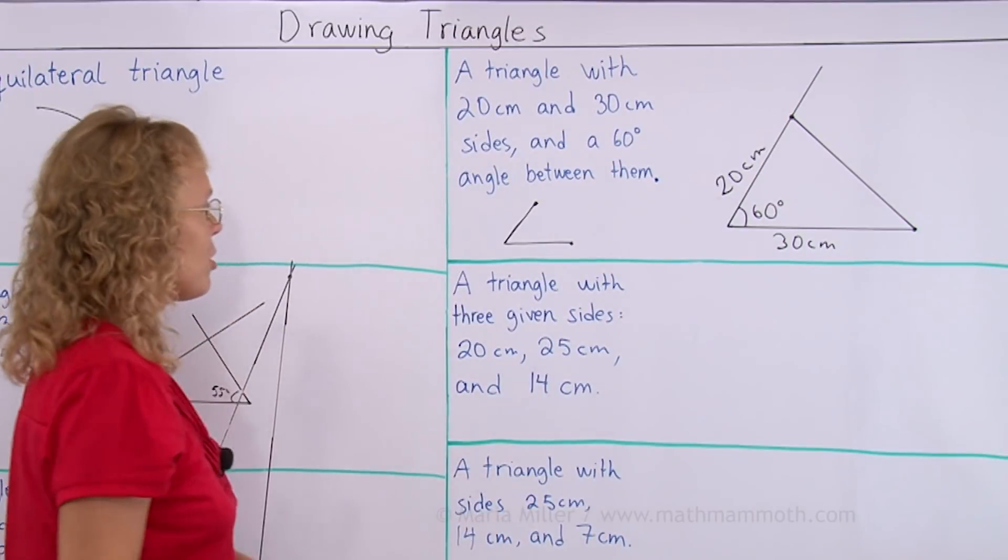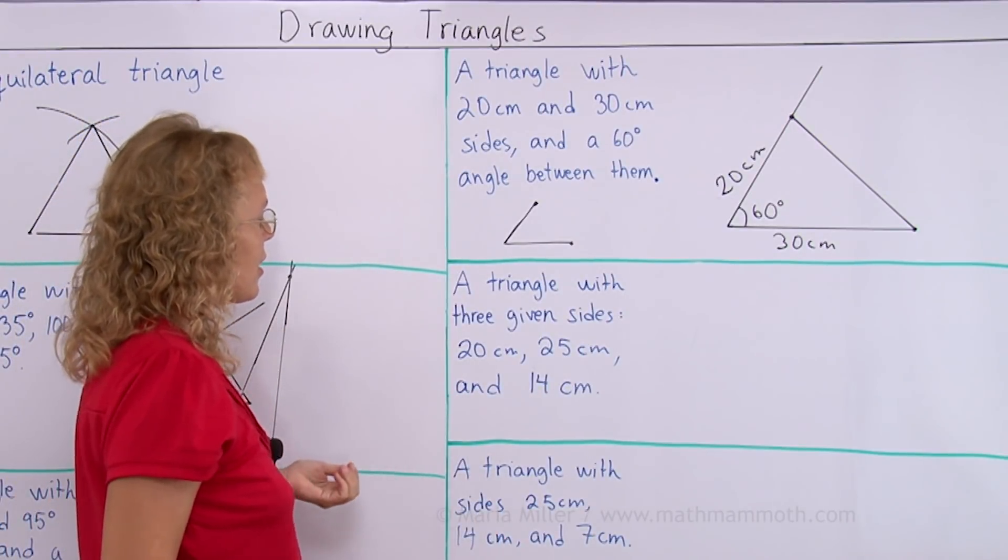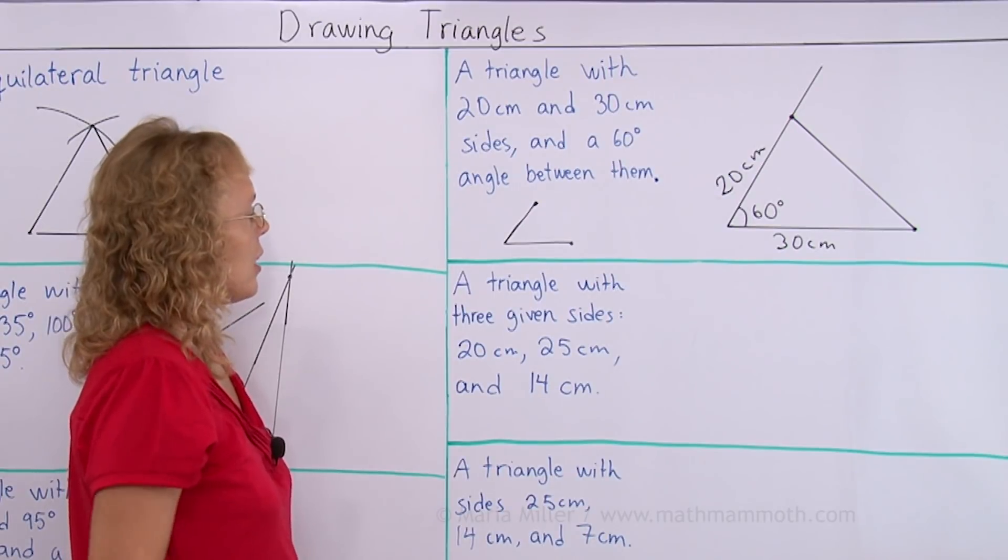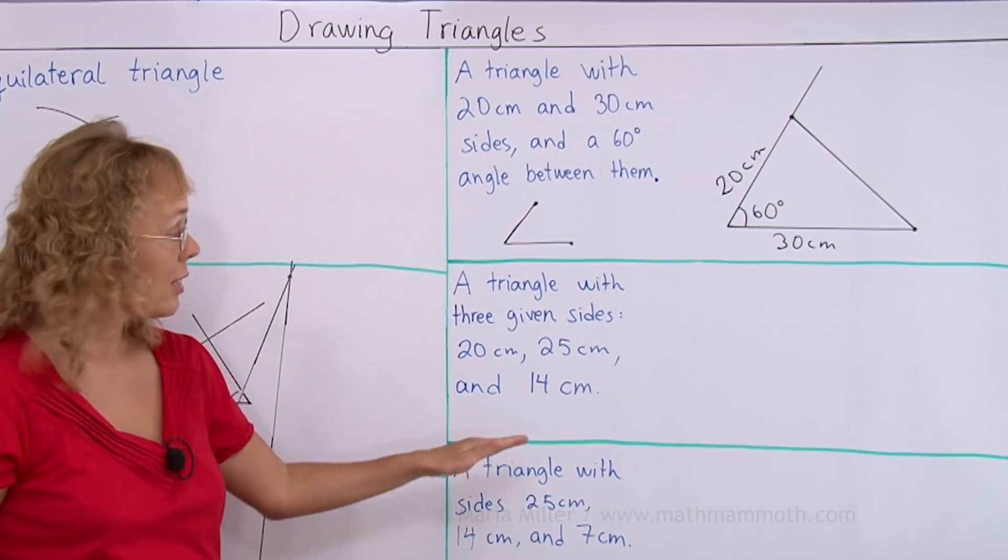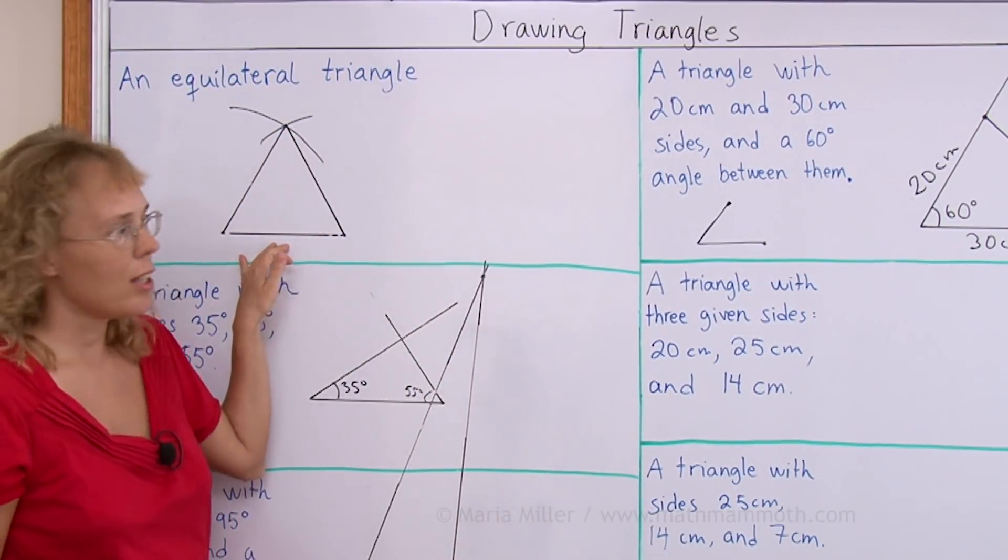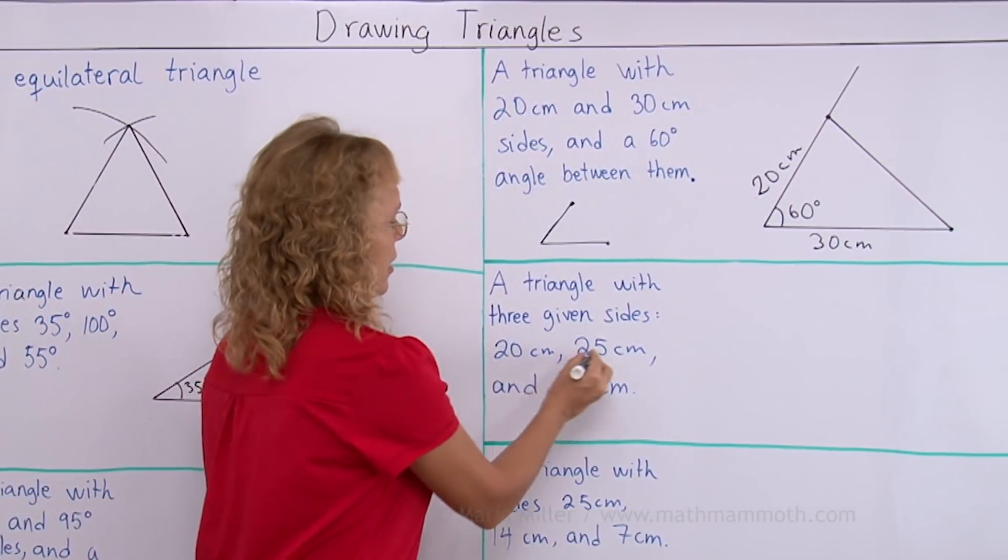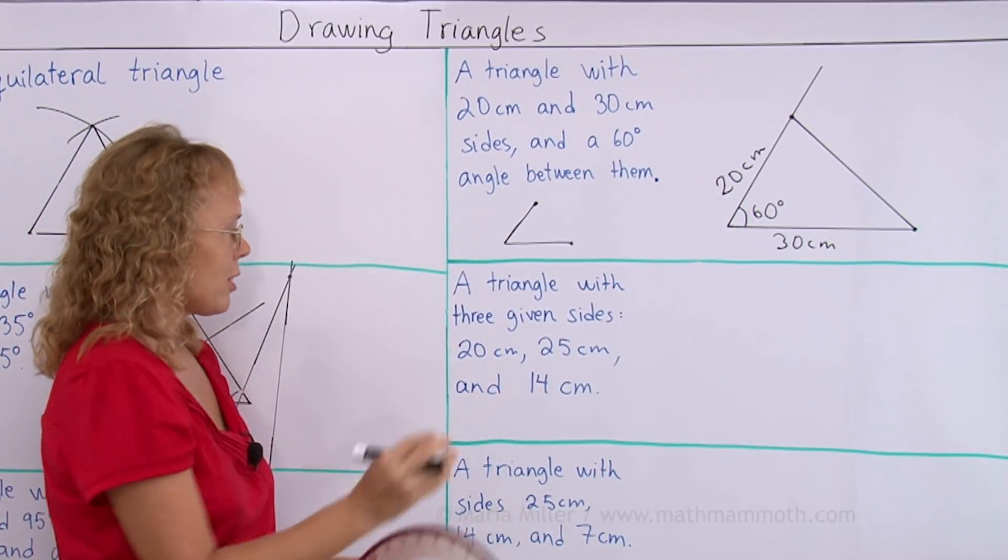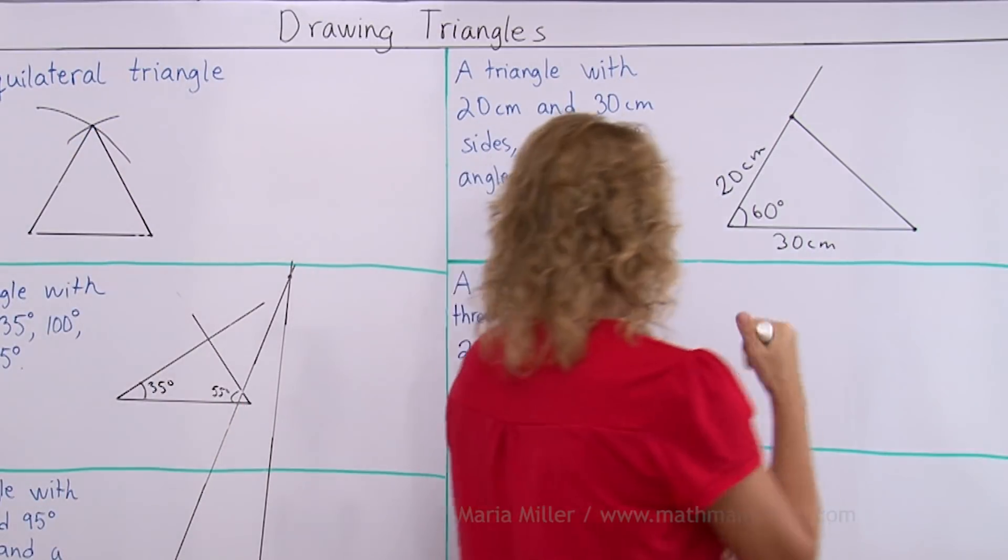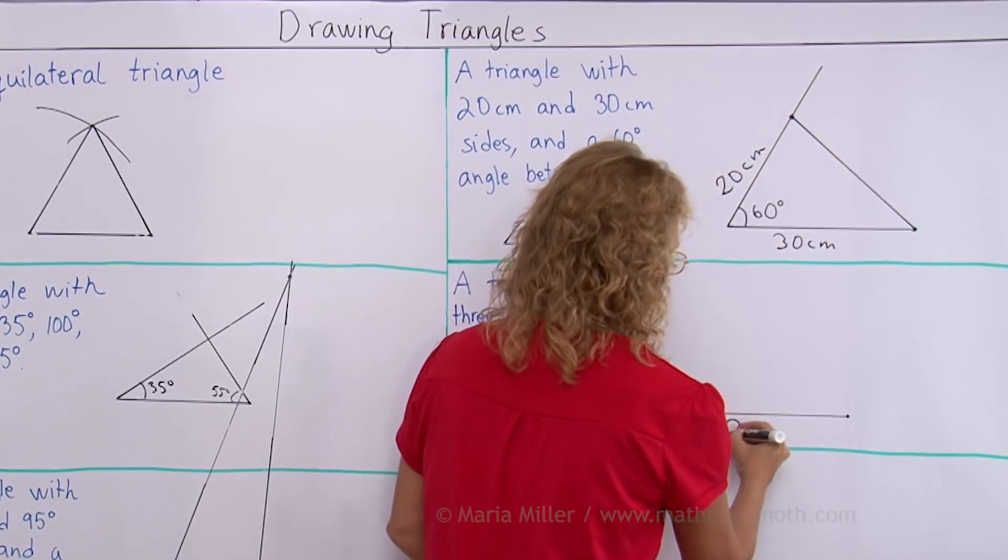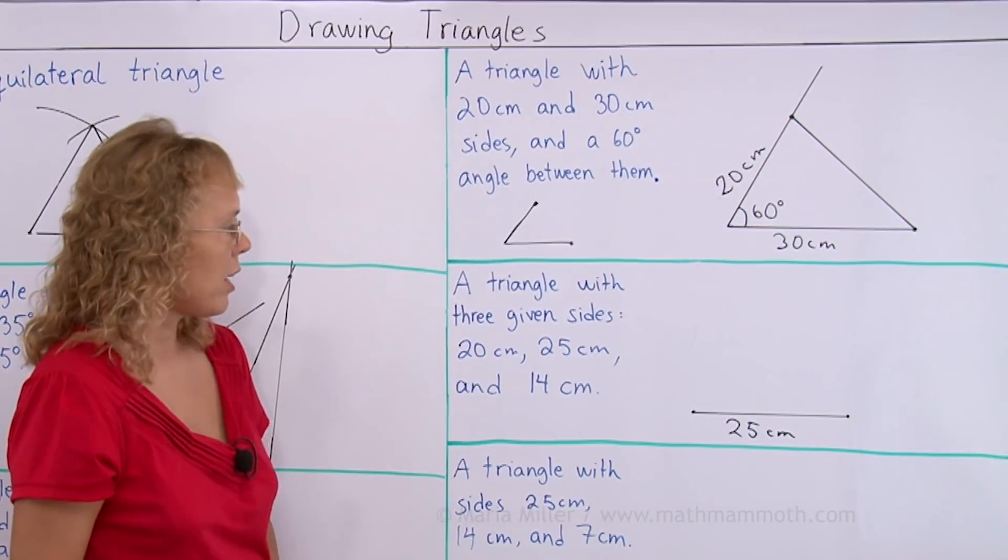Now we are going to draw a triangle with three given sides. 20 centimeters, 25 centimeters and 14 centimeters. And for this I'm going to use the compass again in the same manner as I used here. But since it gives us the side lengths I will first draw one of the sides here. Let's see the 25 for example.